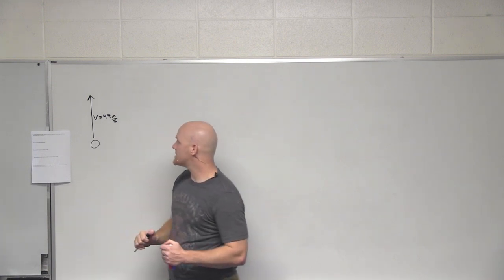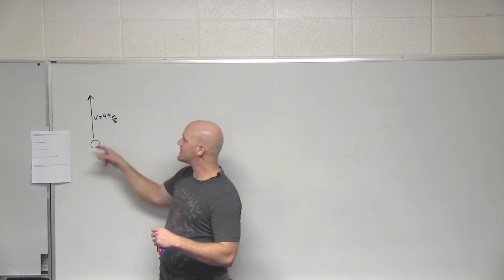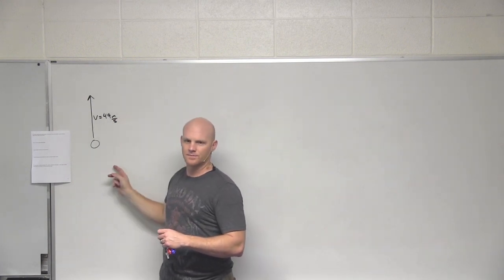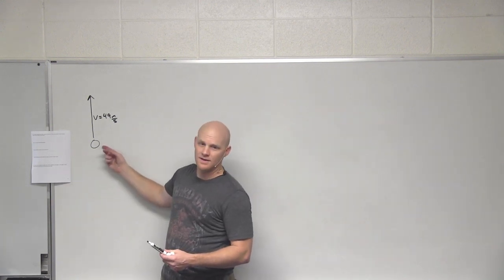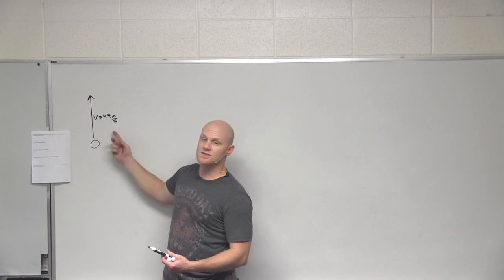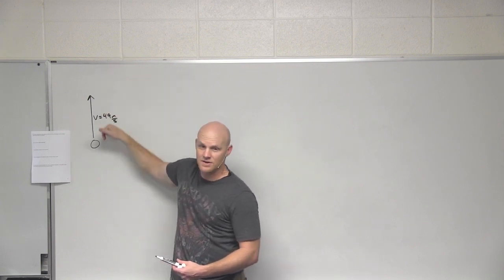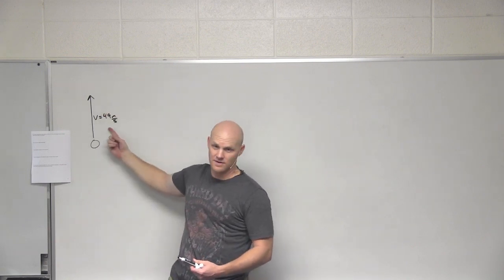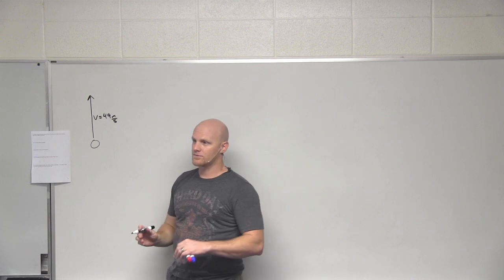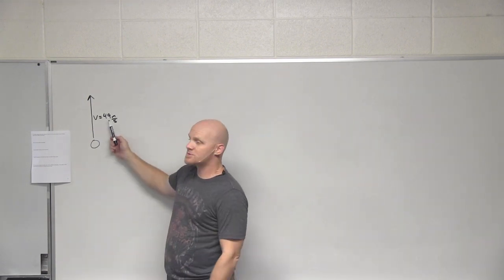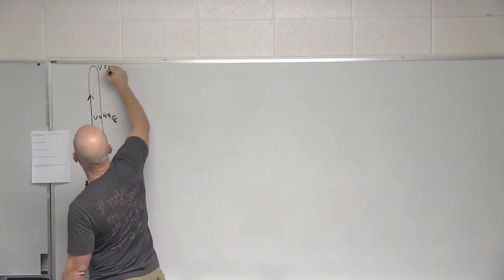The key to this problem is first finding time. If we split this into two problems, we find the time up, then double it for total time. We're starting at an initial velocity, and gravity is going to take a certain amount of time to slow it down to zero — in this case, with 49 meters per second. Then it'll take gravity the same amount of time to speed it back up to 49 meters per second going down.